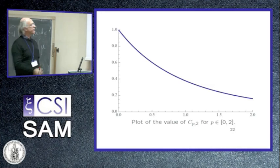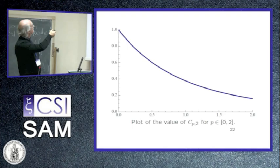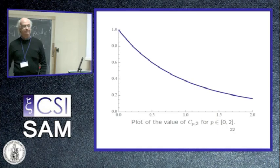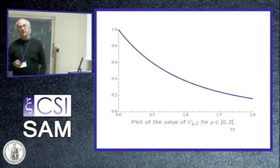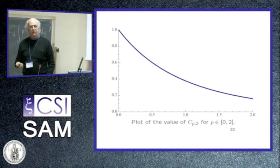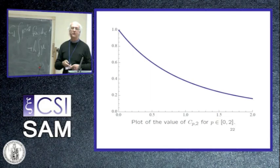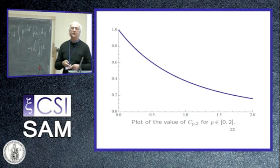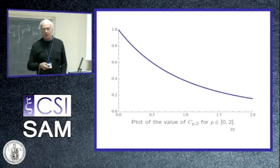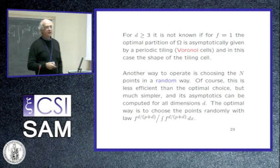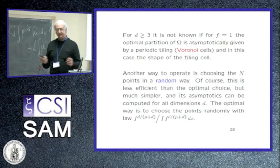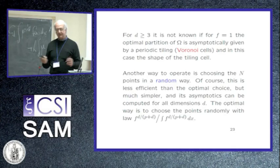This is an explicit computation in dimension two. C(P,1) and C(P,2) are both known. There is a plot of C(P,2) in terms of P: for P very small it is almost one, then it decays. In dimension three, the value of C(P,3) is not known, because the packaging problem in dimension three has not been solved. Nobody knows if there is an optimal periodic tiling in dimension three, nor what the best Voronoi cell shape is.